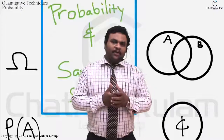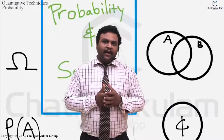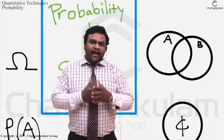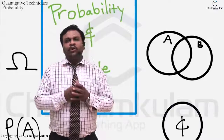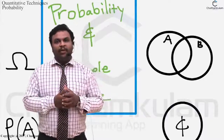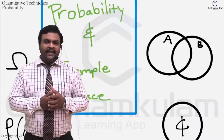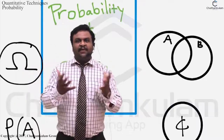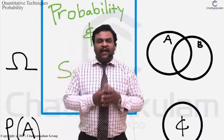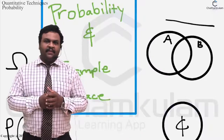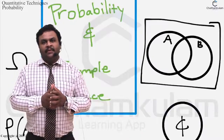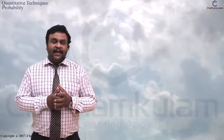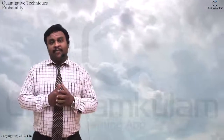For understanding the concept of probability in a very detailed way, we should know some terms used in probability. The first term is sample space. What is meant by sample space and what is the role of sample space in probability? Sample space means it is the total outcomes from an experiment.